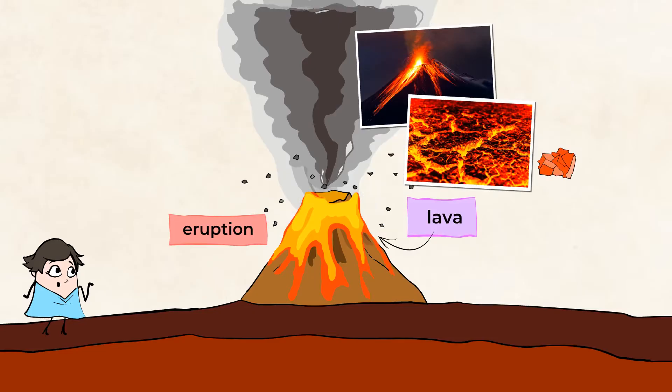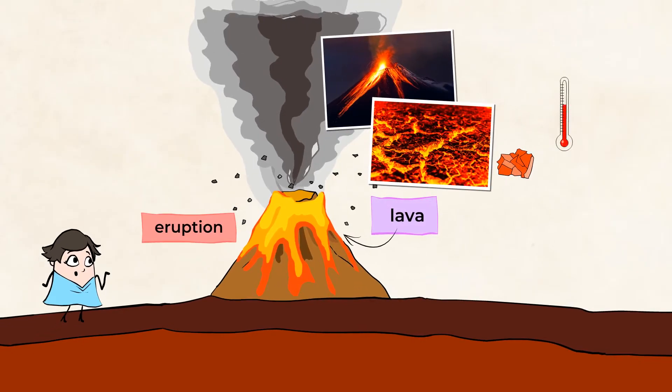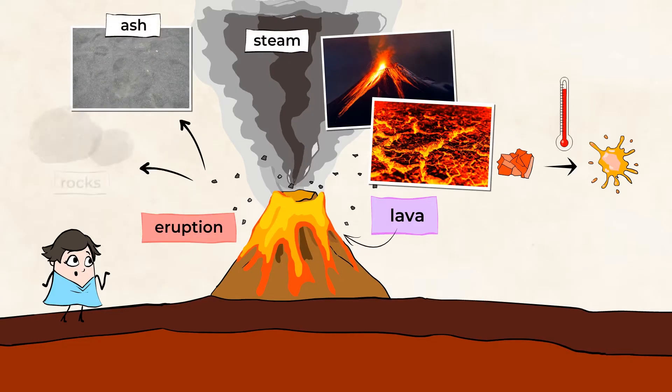Lava is actually rock, but its temperature is so burning hot that it has turned into liquid. But it's not only lava that a volcano releases. There's also hot ash, steam, and rocks.